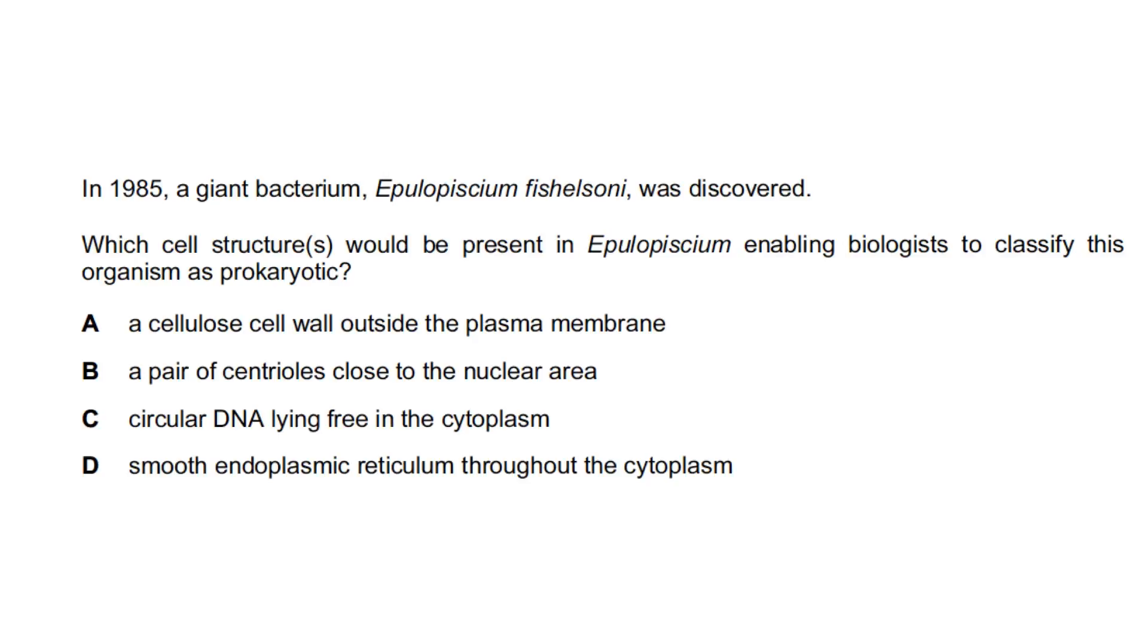In 1985, a giant bacterium was discovered. Which cells such as would be present in this bacterium enabling biologists to classify this organism as prokaryotic? So we're looking for a key feature of prokaryotes. Cellulose cell wall? Well, there is a cell wall, but not cellulose cell wall. A pair of centrioles? No, that's an organelle, membrane-covered organelle, not in prokaryotes. Circular DNA free in cytoplasm? Yes, but to be sure, let's check out the other answer. Smooth endoplasmic reticulum, which is a membrane-covered organelle, not found. So the answer is C.